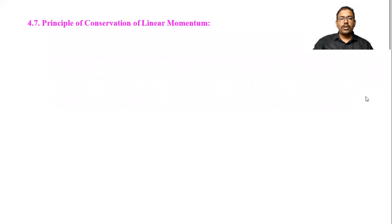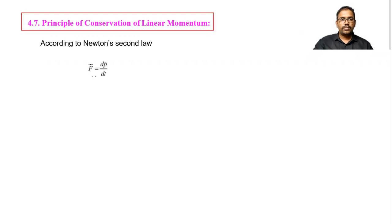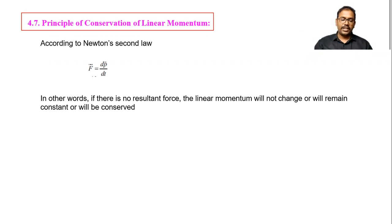Now we start principle of conservation of linear momentum. According to Newton's second law, we can write F is equal to dP by dt. You know that Newton's second law of motion is rate of change of momentum directly proportional to force. So by that we have written this equation.